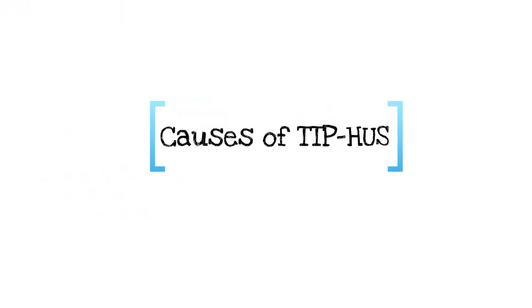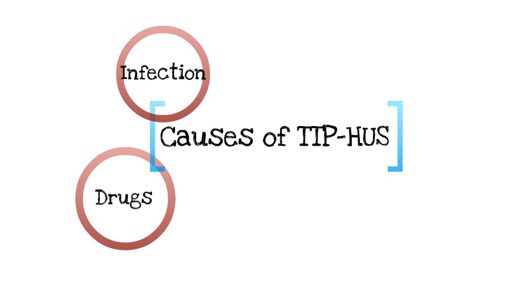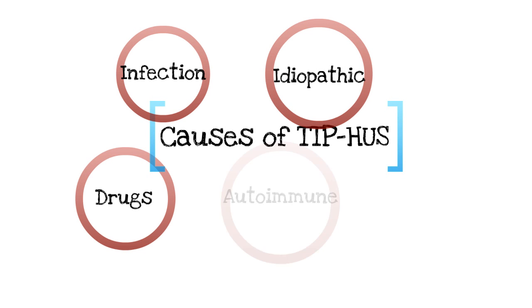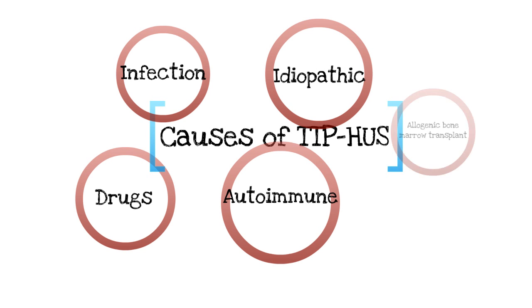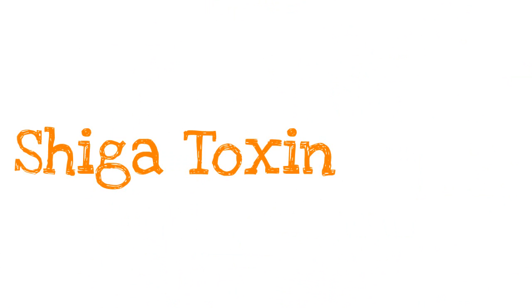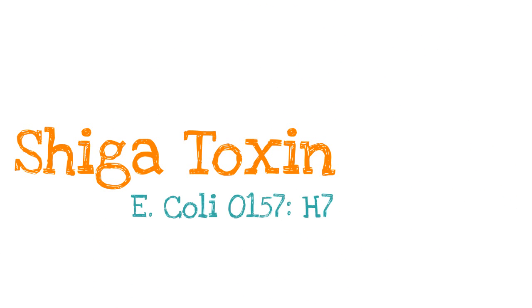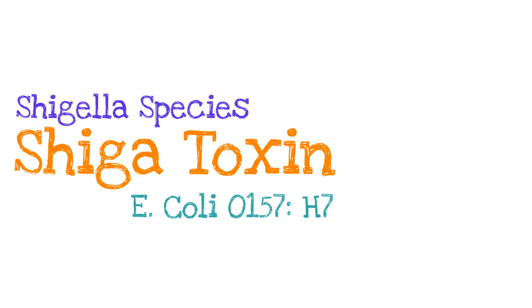Now let's talk about the causes of TTP and HUS. TTP-HUS is caused by infections, drugs, can be idiopathic, autoimmune diseases, as well as allogeneic bone marrow transplants. Looking at the details of infections: the shigatoxin is responsible for developing TTP-HUS. The classic bacteria tested is E. coli O157:H7. Other shigella species can also cause TTP-HUS.